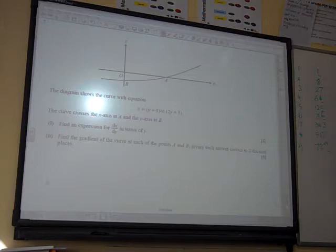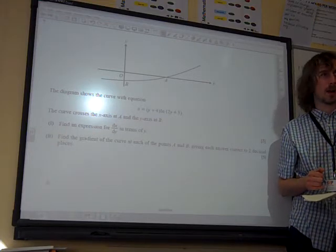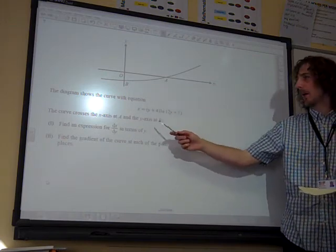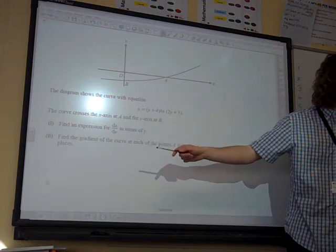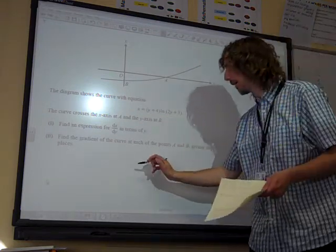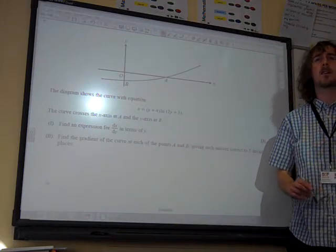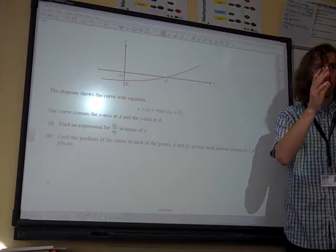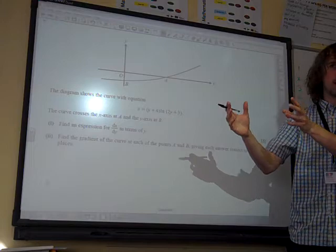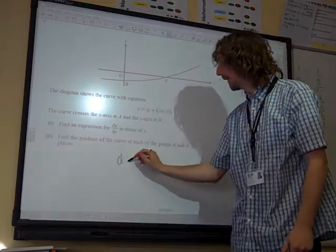Don't be put off by the fact that everything is swapped round. We've just got it written as x as a function of y, and we're after dx by dy. So we're just going to differentiate this normally. There's no big tricks here. What kind of thing is this to differentiate? Product rule.